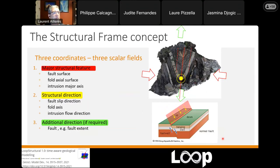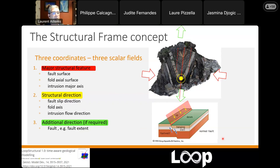So how do we build the geometries — the structural geology? What differentiates Loop from any other package is that instead of building a single scalar field for lithology or stratigraphy as implicit modeling packages do, we build three scalar fields for every event. A folding event is an event, a fault is an event, and conformable stratigraphy is an event.